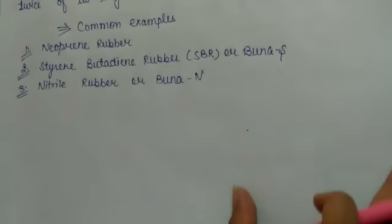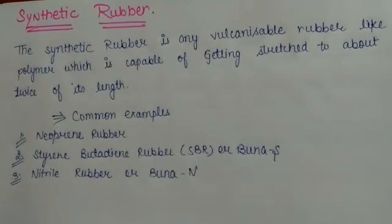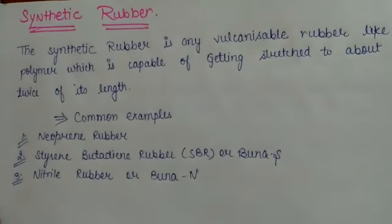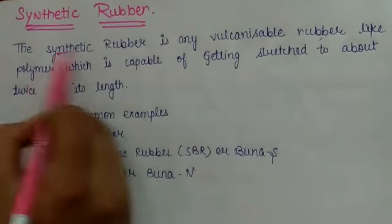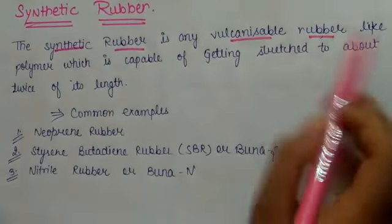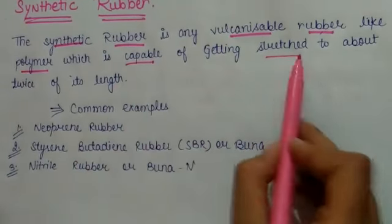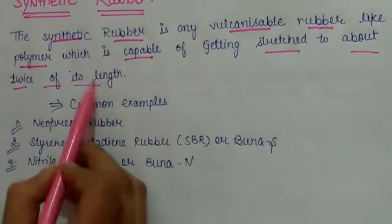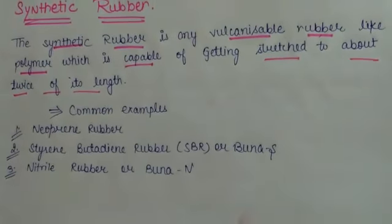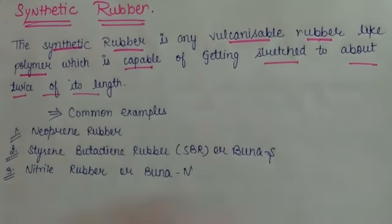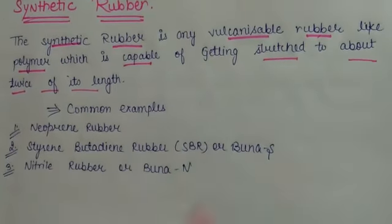Then we will learn synthetic rubber. Synthetic rubber is vulcanizable rubber, a polymer which is capable of stretching to about twice of its length.